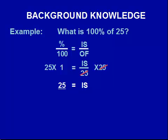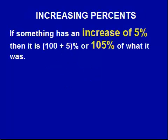So 25 is 100% of 25. Now let's talk about increasing percents. If something has increased by 5%, then it is greater than 100% — it's 100 plus 5, or 105% of what it was.